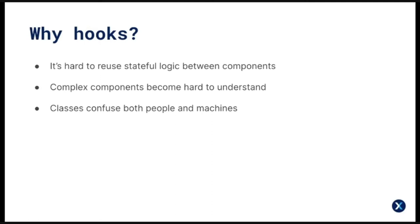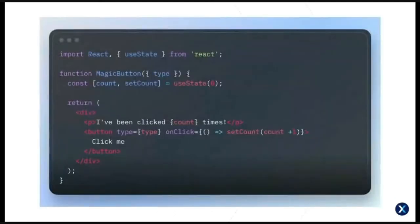The third reason is that classes confused people and were causing potential issues in compiler optimizations. The React team was looking ahead at better compiling, and found that class components were encouraging unintentional patterns that made optimization quite difficult. Another point: classes in JavaScript can be tricky to understand especially because of the way 'this' works, which is a little non-standard compared to other programming languages, and they didn't want that to be a barrier to entry.